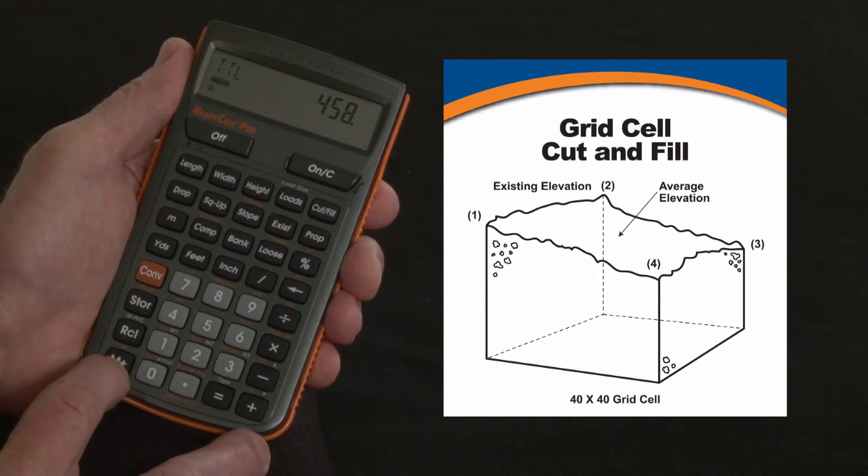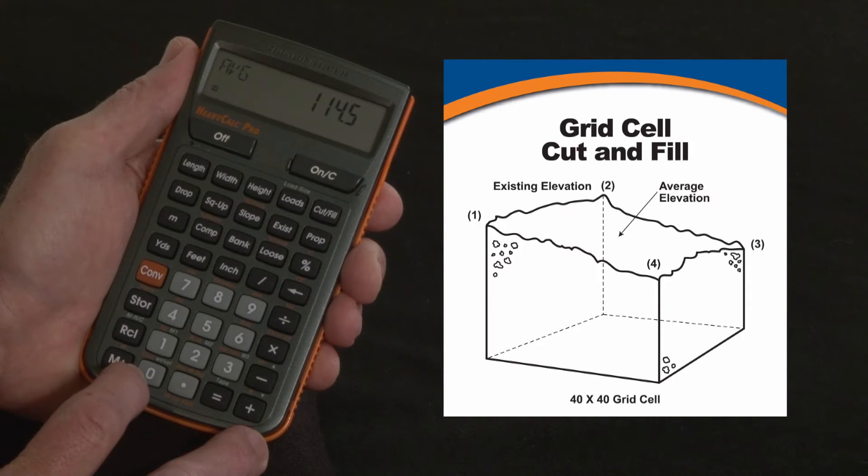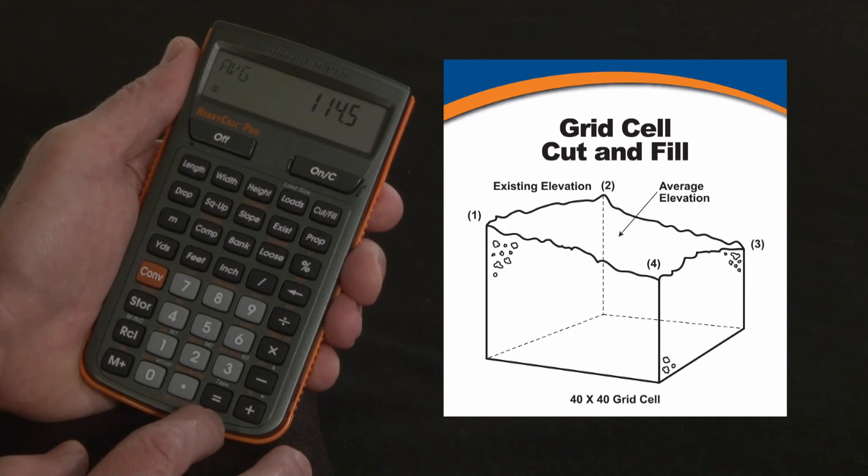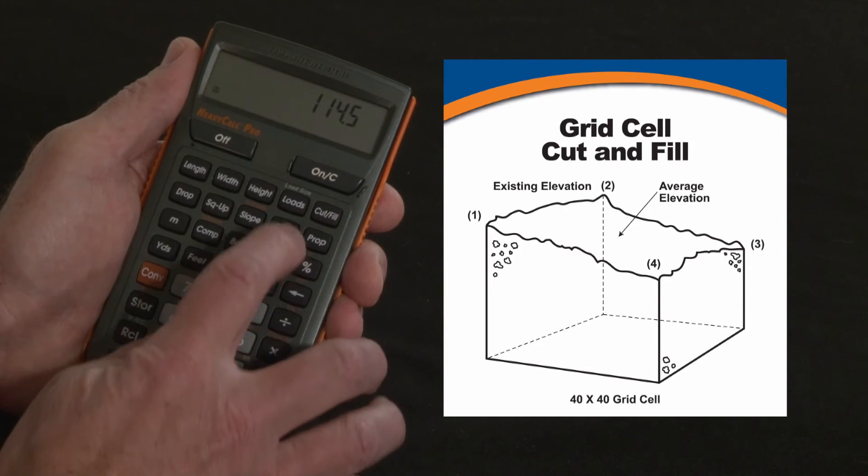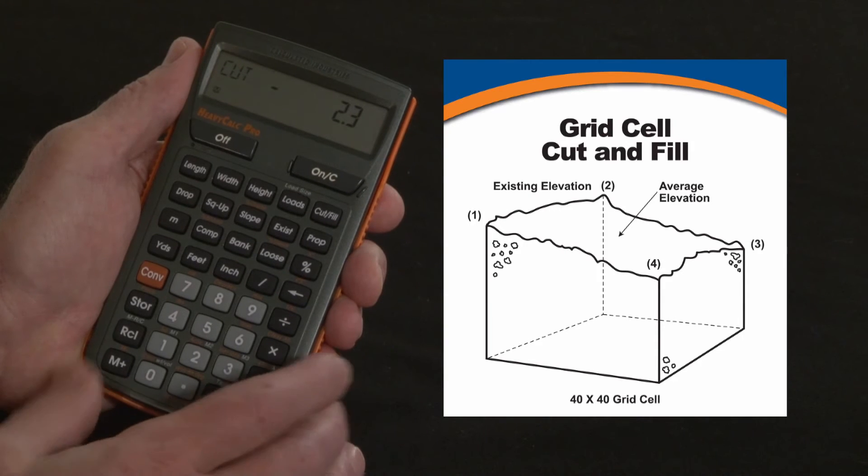Now I can recall my total in the memory, but I don't want the total. If I press it again, it gives me the average of all those numbers, 114.5. So I can set that in as my existing by hitting equals existing. And now hit my cut fill, and we're going to cut 2.3.